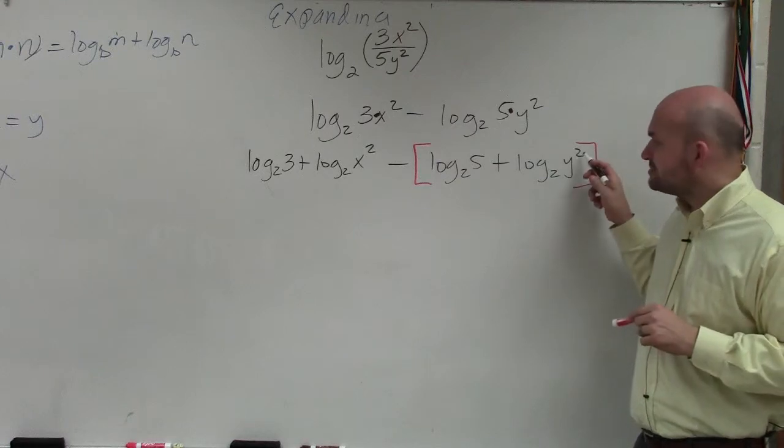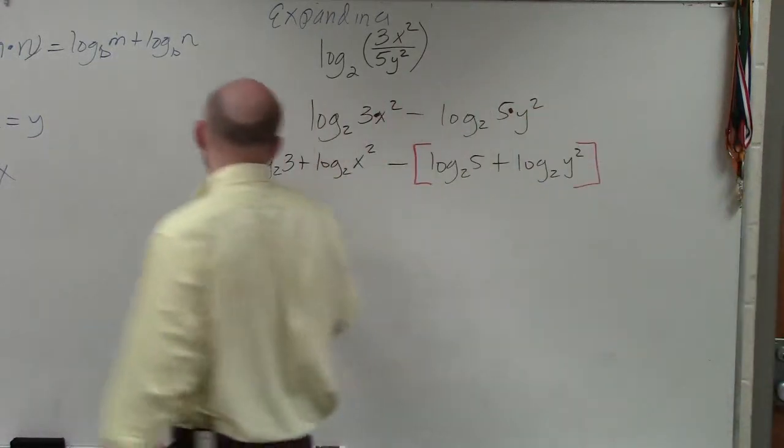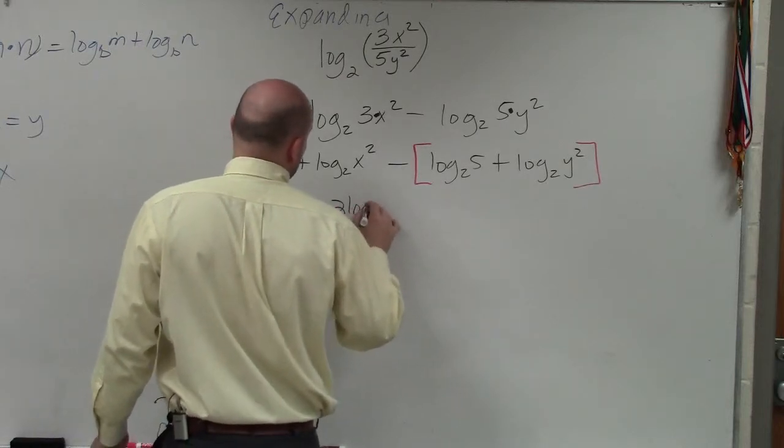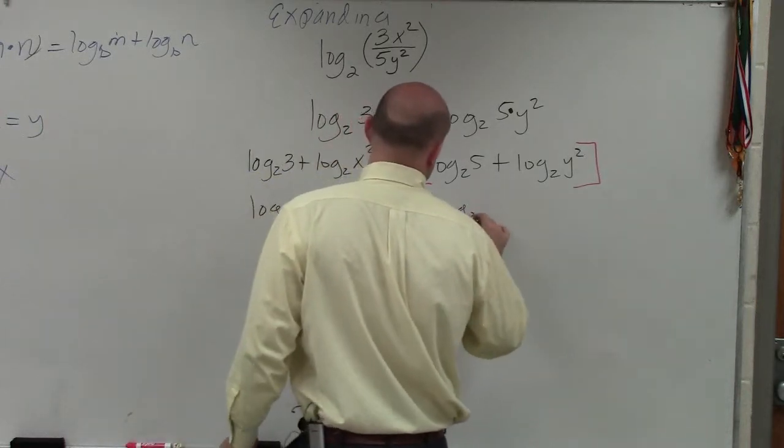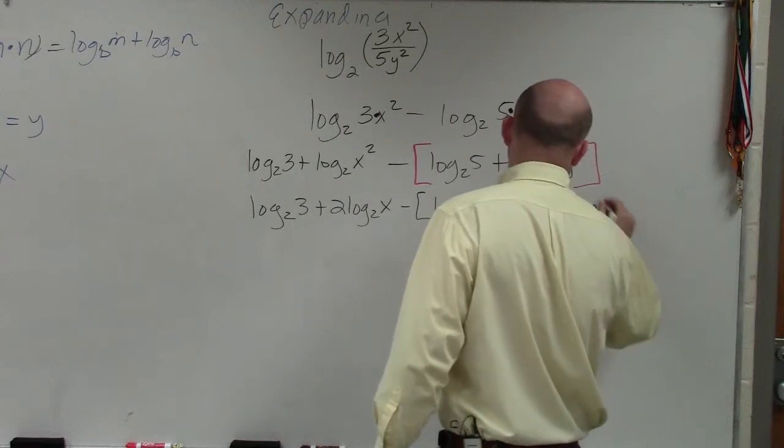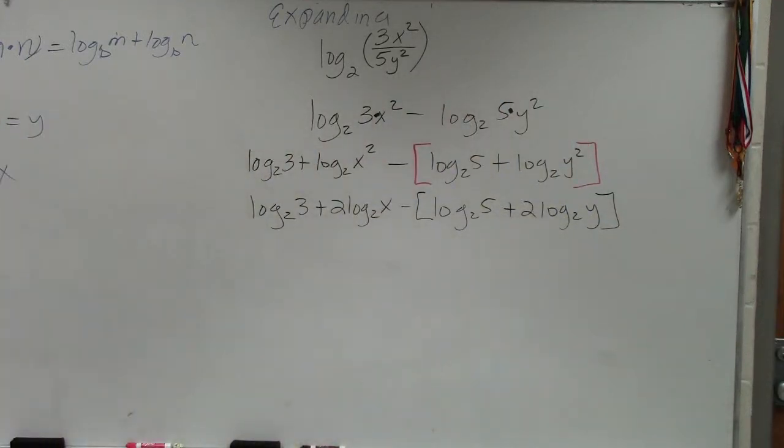Now the last thing is I'm just going to use the power rule and take my powers and rewrite them in front. So my final answer is log base 2 of 3 plus 2 log base 2 of x minus log base 2 of 5 plus 2 log base 2 of y. And that's your final answer. It has to have the brackets.